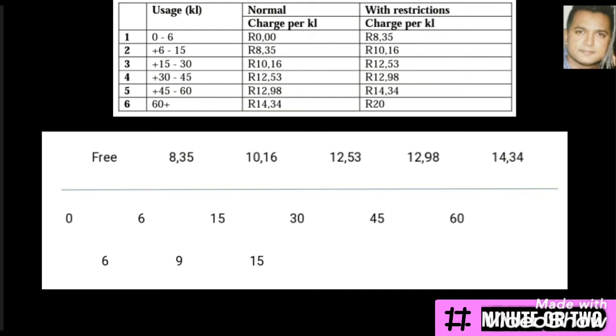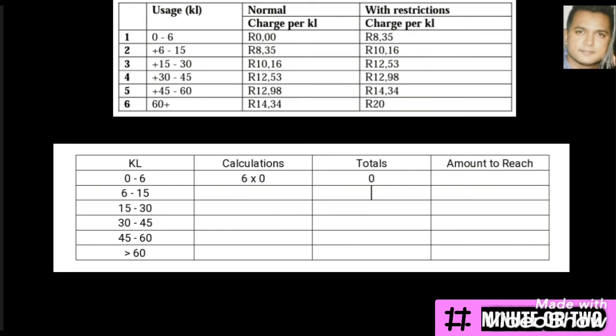I must stop at R200, so if the 15 kilolitres becomes too much I need a method to arrive at exactly R200. Before showing how we arrive at R200, I'll explain using the table method, which will make much more sense. This same principle can then be applied in the number line method. In the table method we have the intervals in the first column, calculations in the next, subtotals, and an additional column for the amount we need to reach — which in this example is R200.